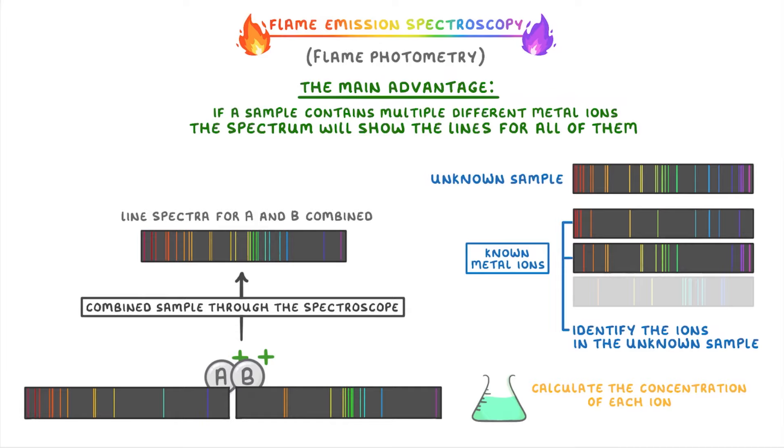So in this case, you can see that that would be these top two metal ions, because their lines are also shown in the line spectra of the unknown sample.